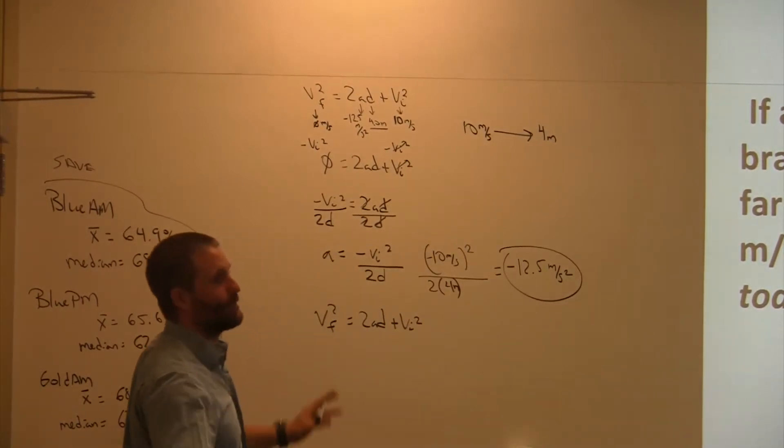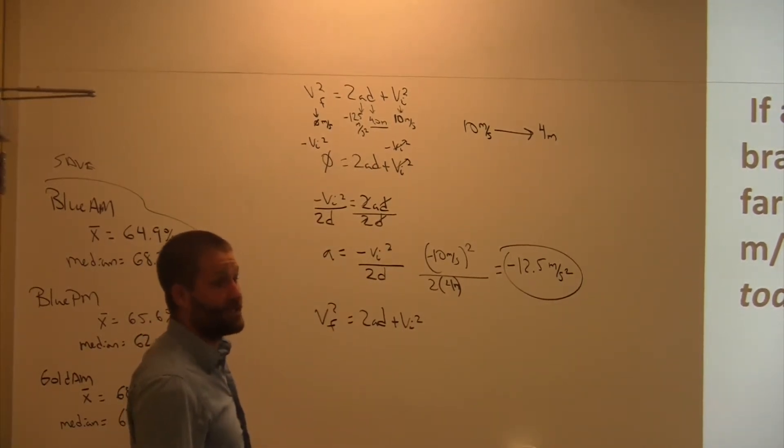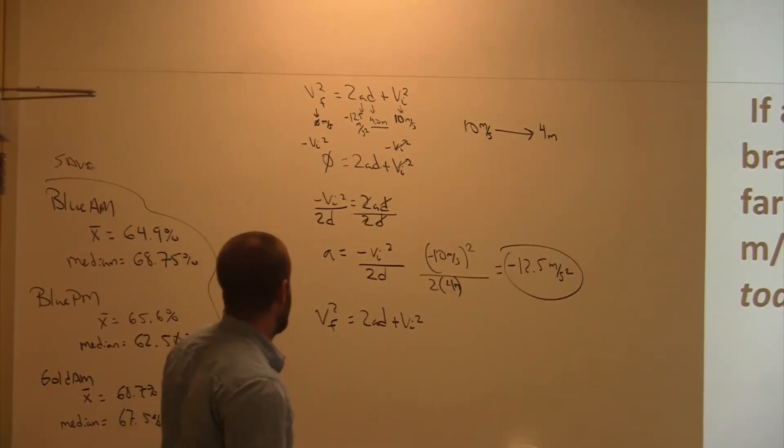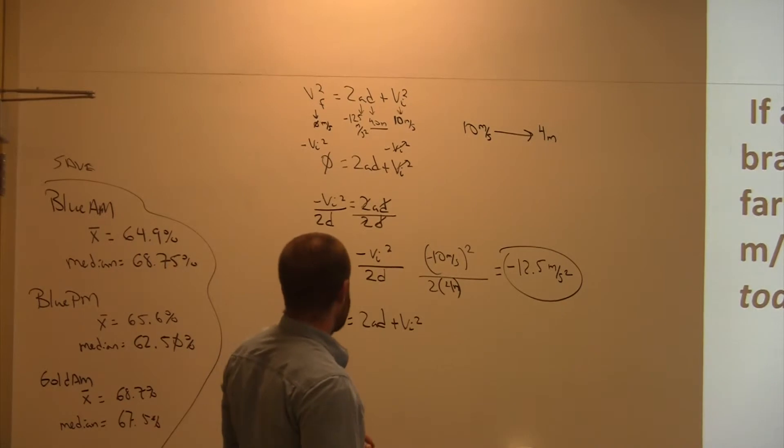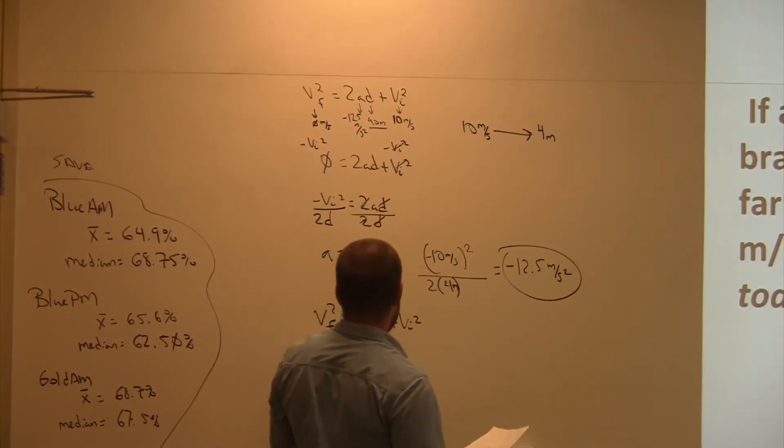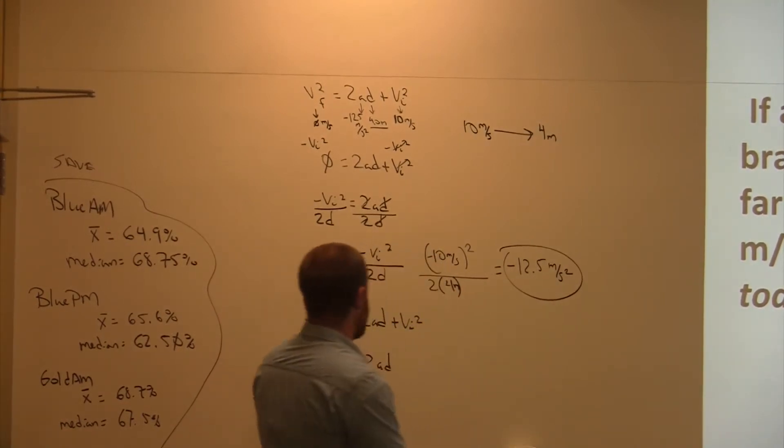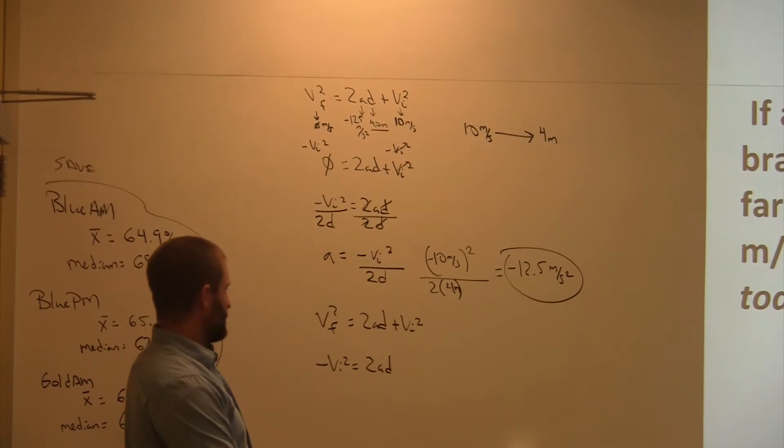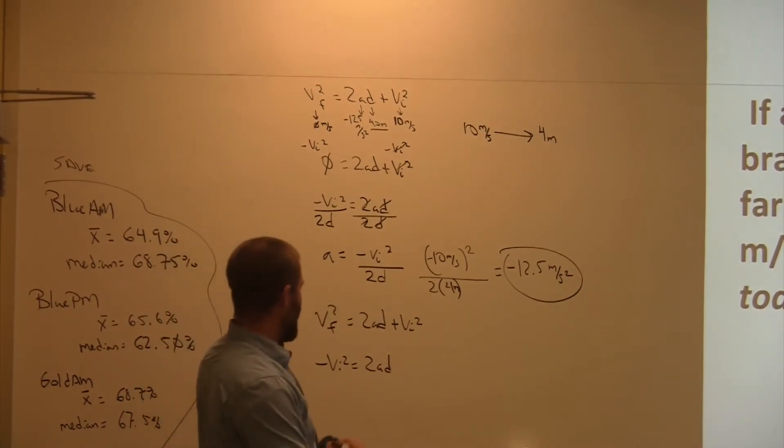We're almost done. I'm showing you something. You're not going to do something that's complicated on a quiz or a test. I'm showing the people that can grasp this. If you don't understand all of this, don't freak out. What's my final velocity? Zero. So once again, I'm going to do negative VI squared equals 2AD. But now what am I solving for? D, right? I'm going to find the distance.